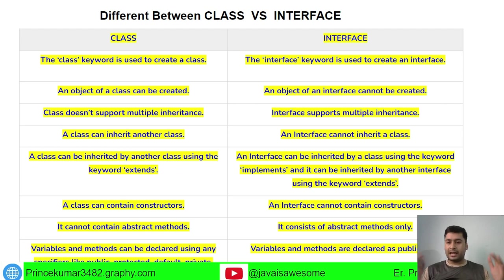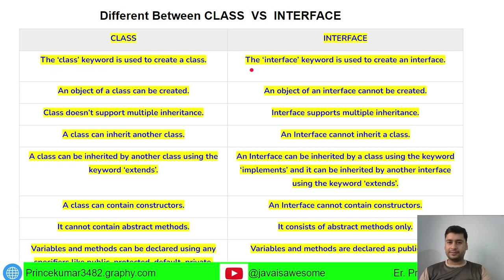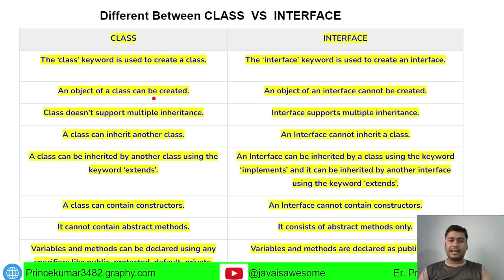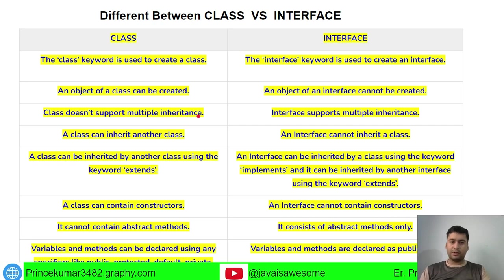Now let's talk about the differences between classes and interfaces. The class keyword is used to create a class and the interface keyword is used to create an interface. An object of a class can be created, but you cannot create an object for an interface.